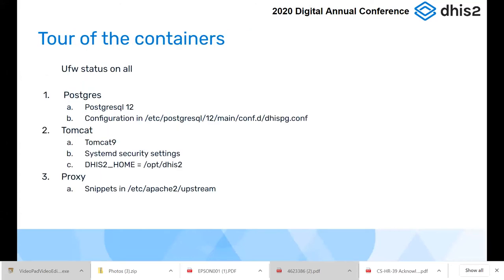We have four containers currently — let's do a little tour through them. We've tried to make sure each container is only minimally accessible. For example, the Tomcat container should be accessible from the proxy because the proxy needs to forward requests to it. Similarly, the Postgres container should be available to the various Tomcat containers. Those firewall rules have been set up automatically. Let's go through them one at a time, starting with the Postgres container — based on Postgres 12 by default.